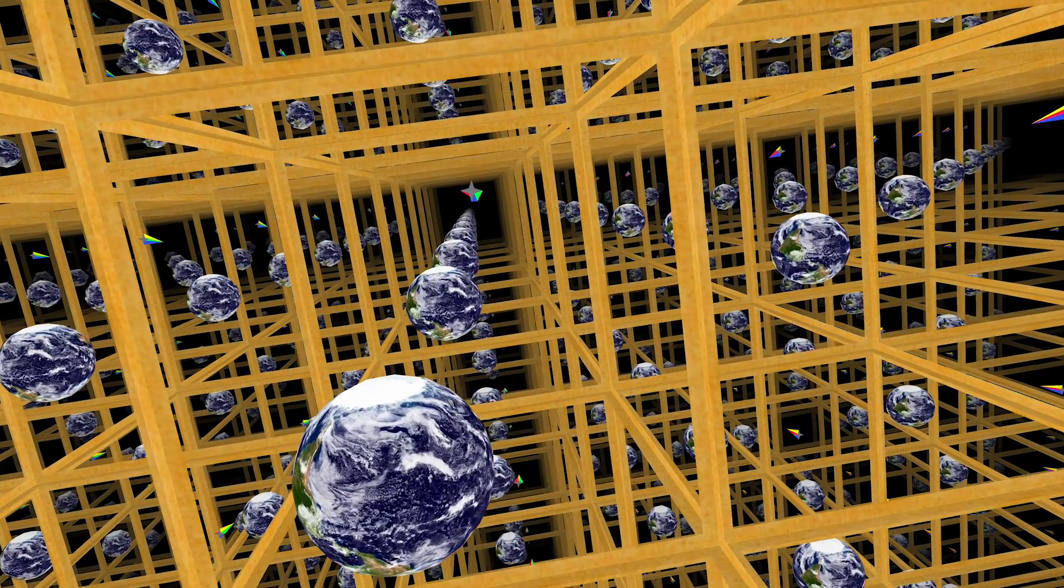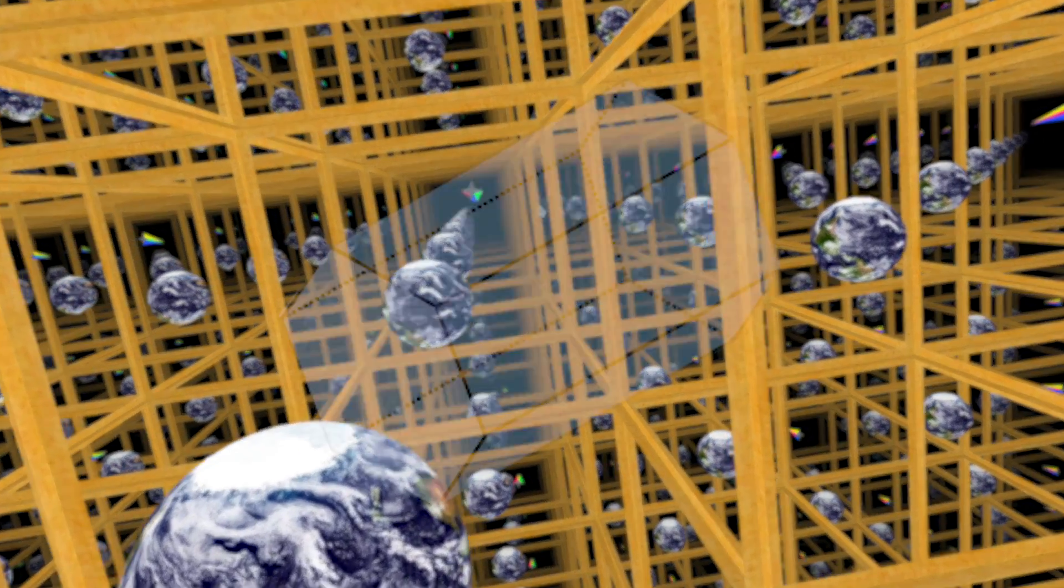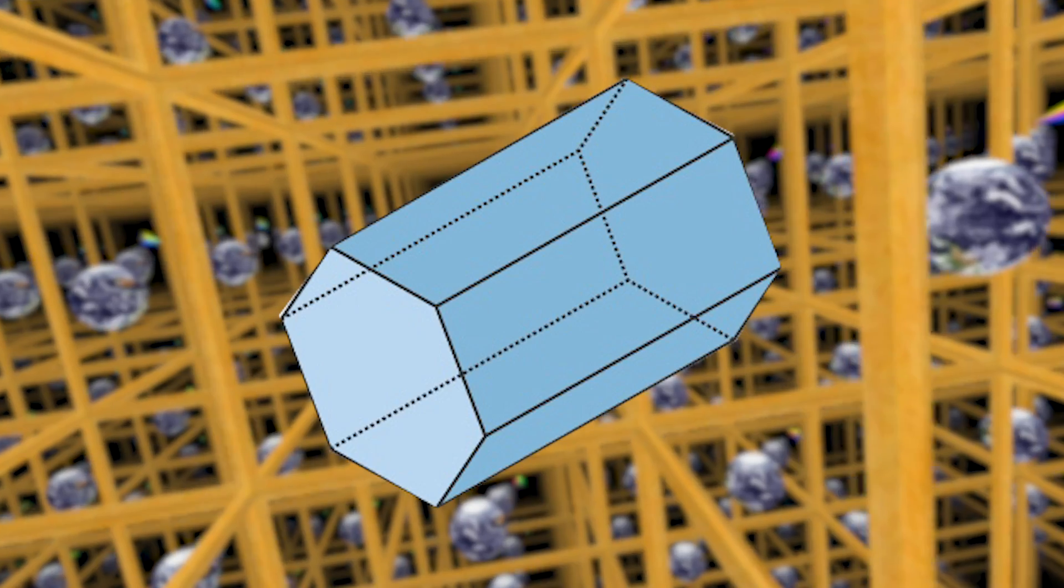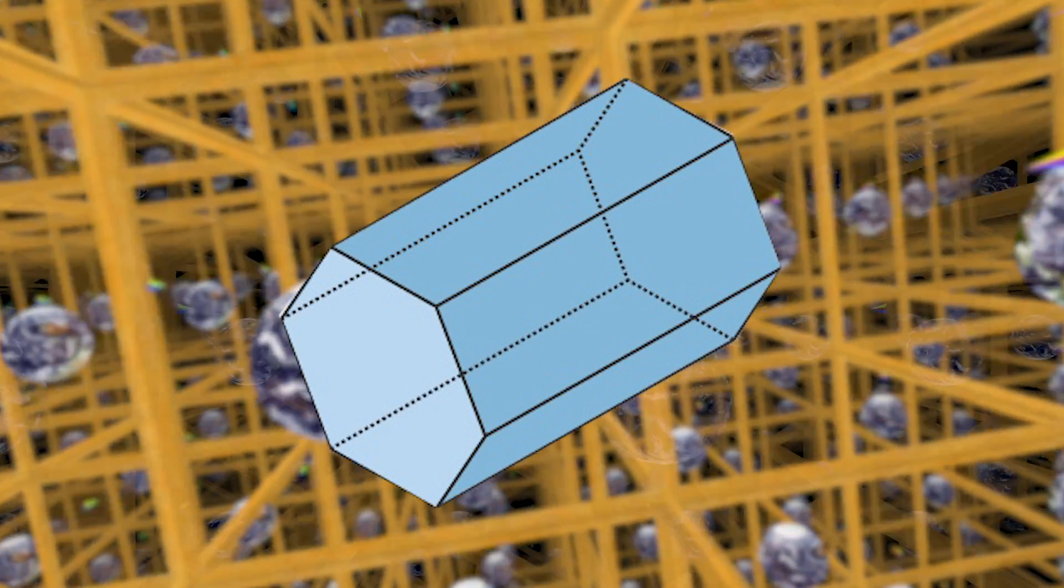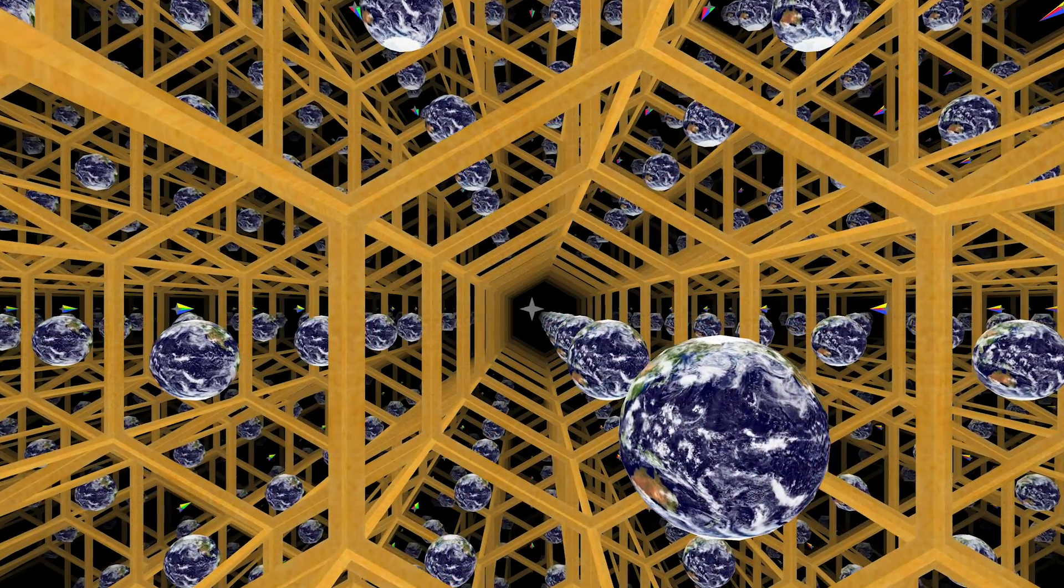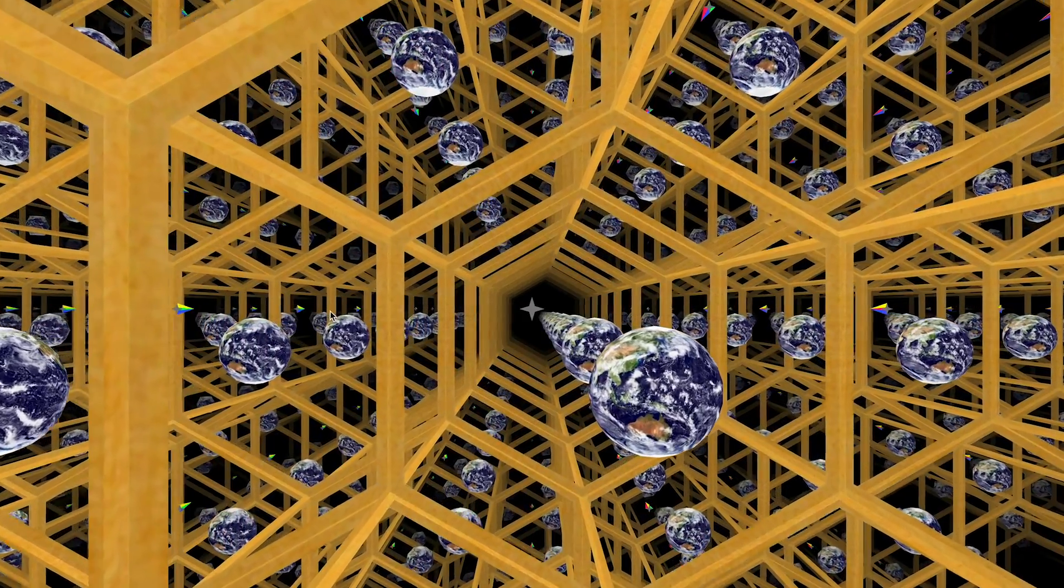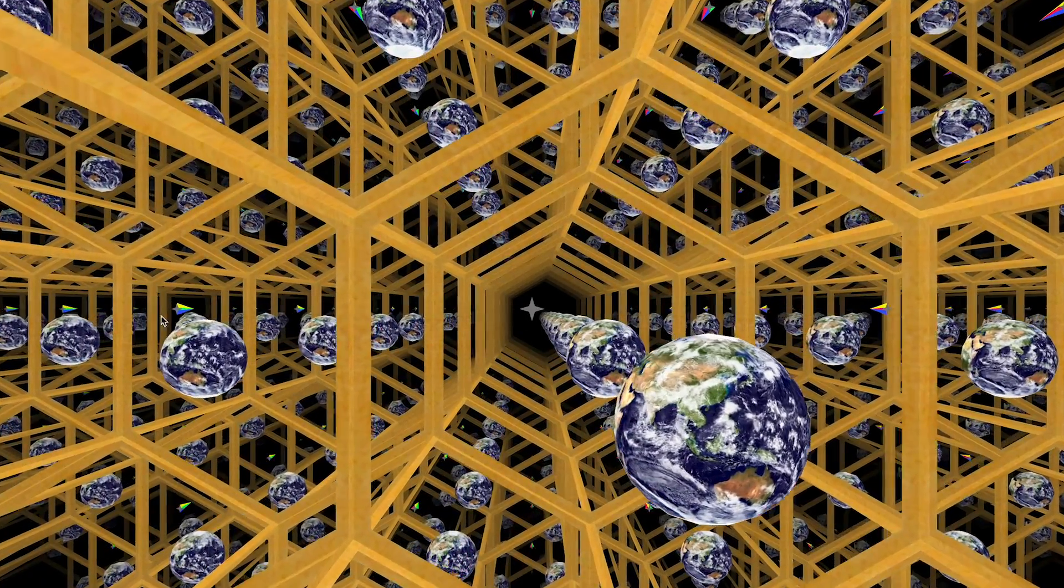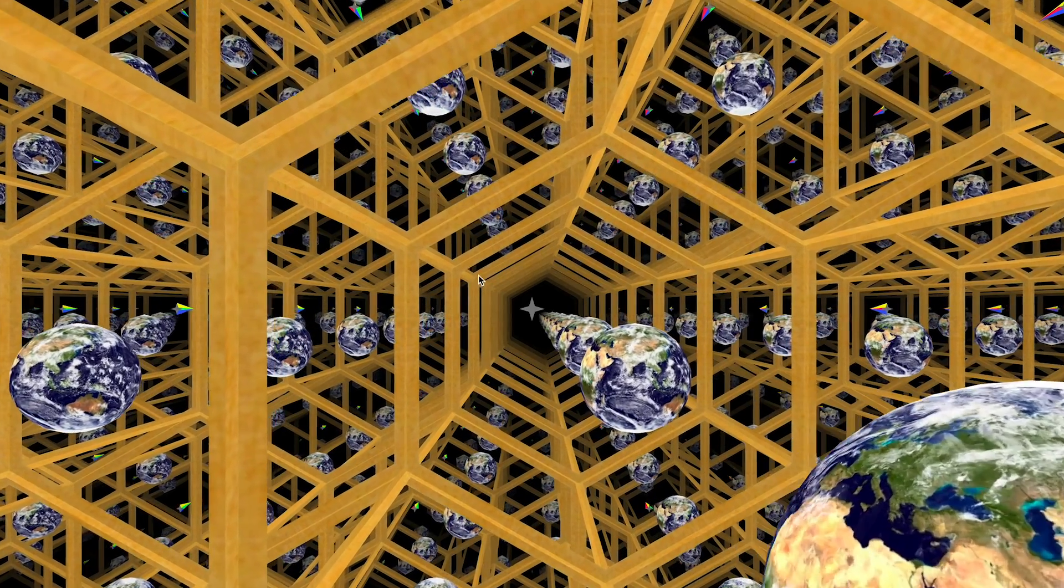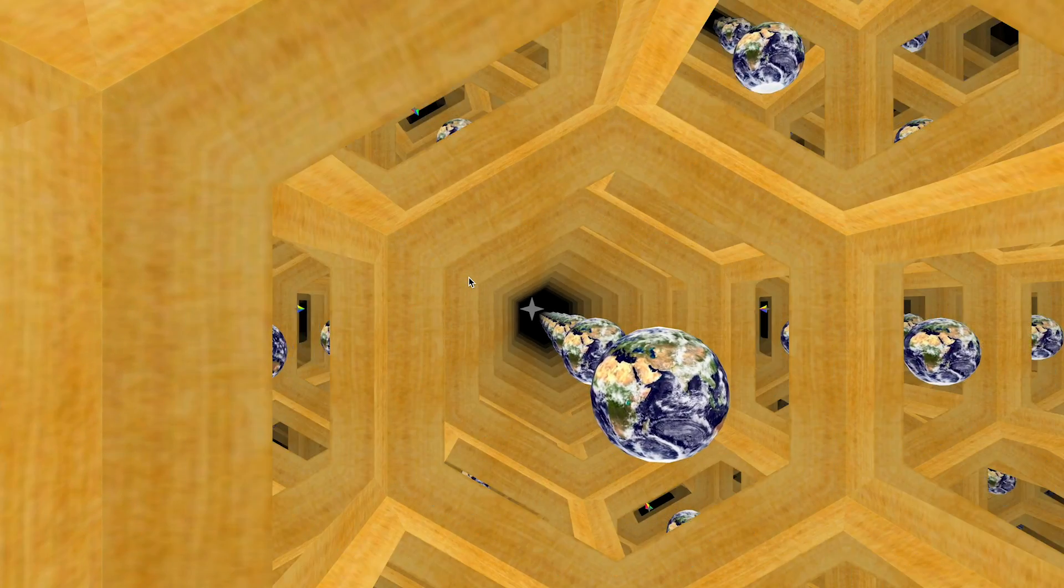Now, if instead of a cube, the universe was a hexagonal prism where opposite faces were connected, so again, no boundaries, then this would be what that universe would look like. Here we can see our copies. We have the hexagon face here. It's still one single finite prism, but there's the wraparound making it seem infinite.